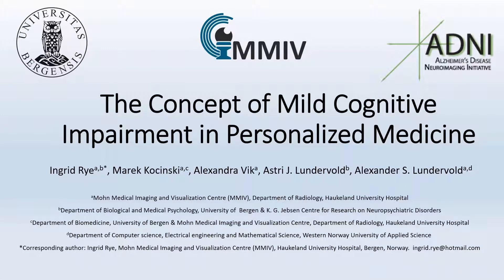Mild cognitive impairment is a diagnostic construct used to define an intermediate state between normal cognition and different forms of dementia. However, this is a patient group that has proven to be very heterogeneous, and not all patients will show a trajectory where they go on to develop dementia. It is therefore of great importance to identify predictors of different trajectories within this MCI cohort. This motivated the current study in which we will use baseline data on tests of cognition, global function, and neuropsychiatric symptoms from a total of 754 MCI subjects from the Alzheimer's Disease Neuroimaging Initiative.